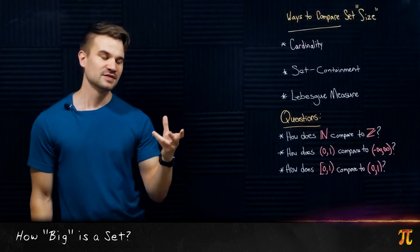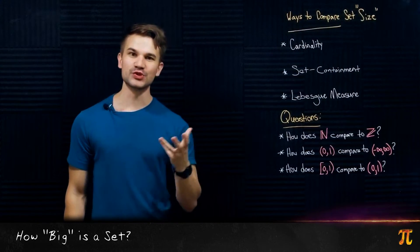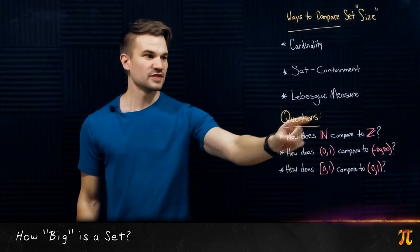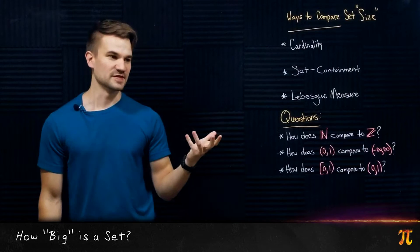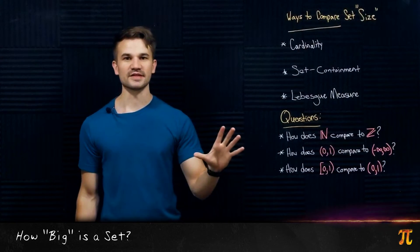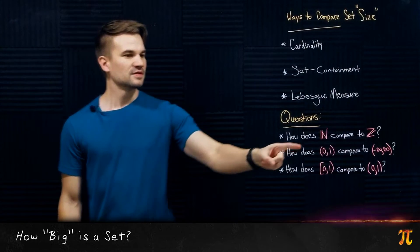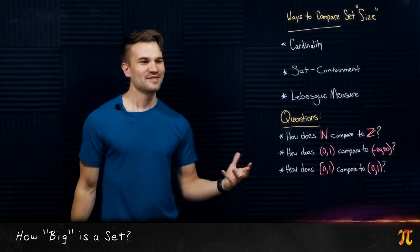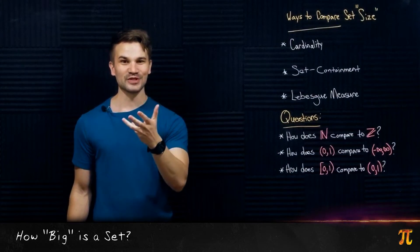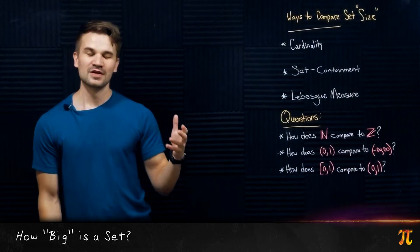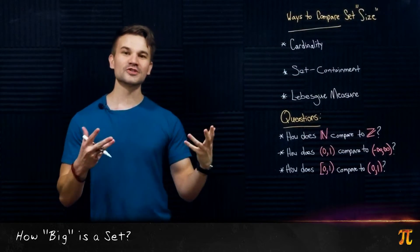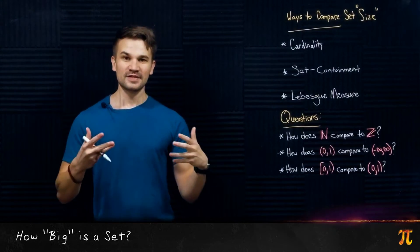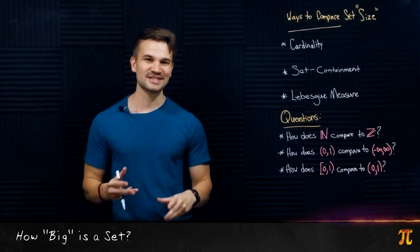Now some of the results he got are seemingly unintuitive to some people. For example, he concluded that the natural numbers and the integers have the same number of elements — they have the same cardinality. But people say, wait a minute, the natural numbers is a subset of the integers, so how could it be that the integers and the natural numbers have the same amount of elements? Well, the issue is there are multiple ways to compare the sizes of sets, and all of these different ways have their place.